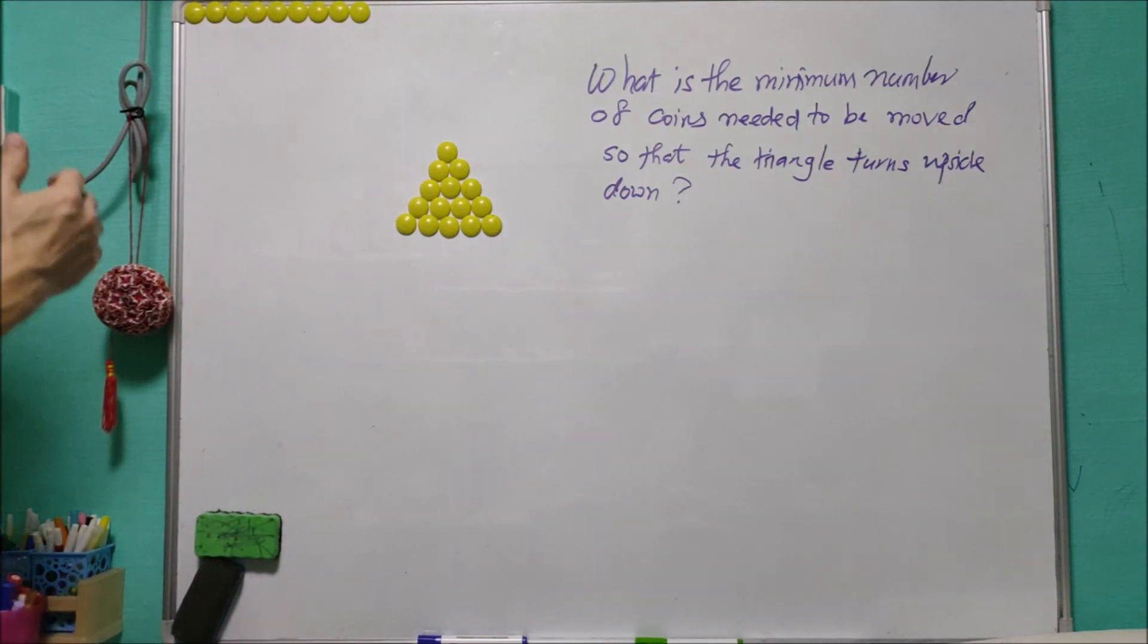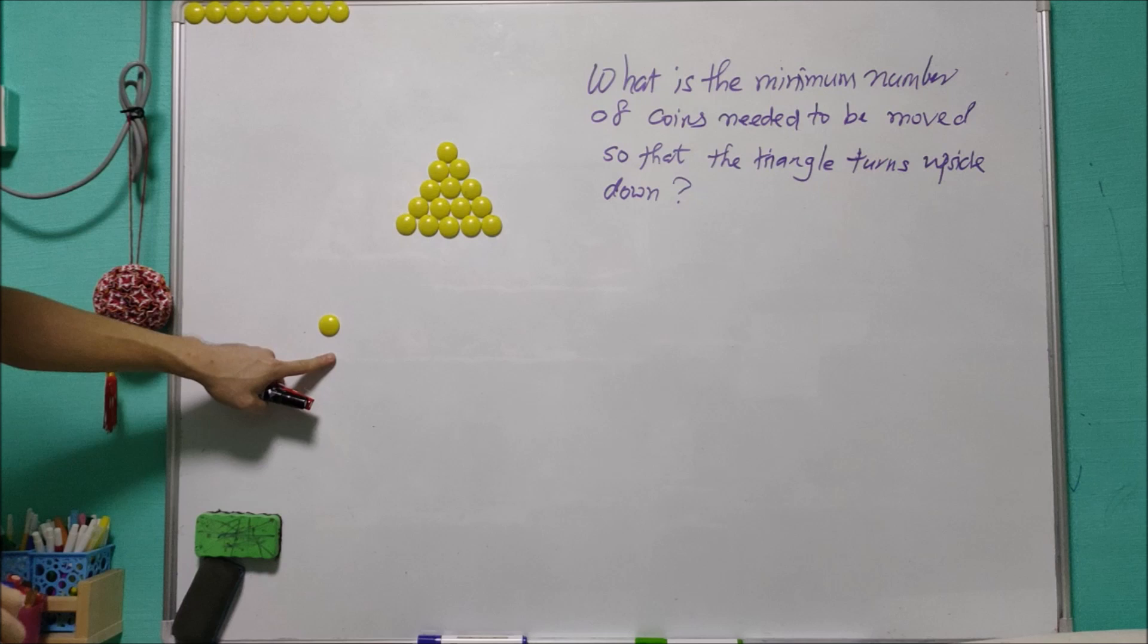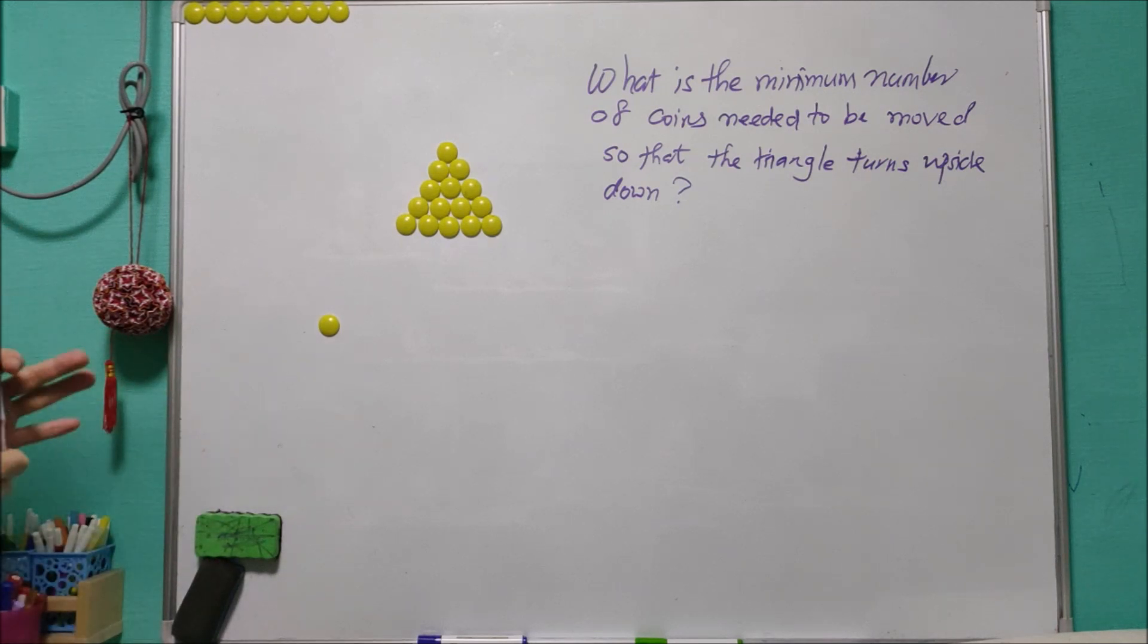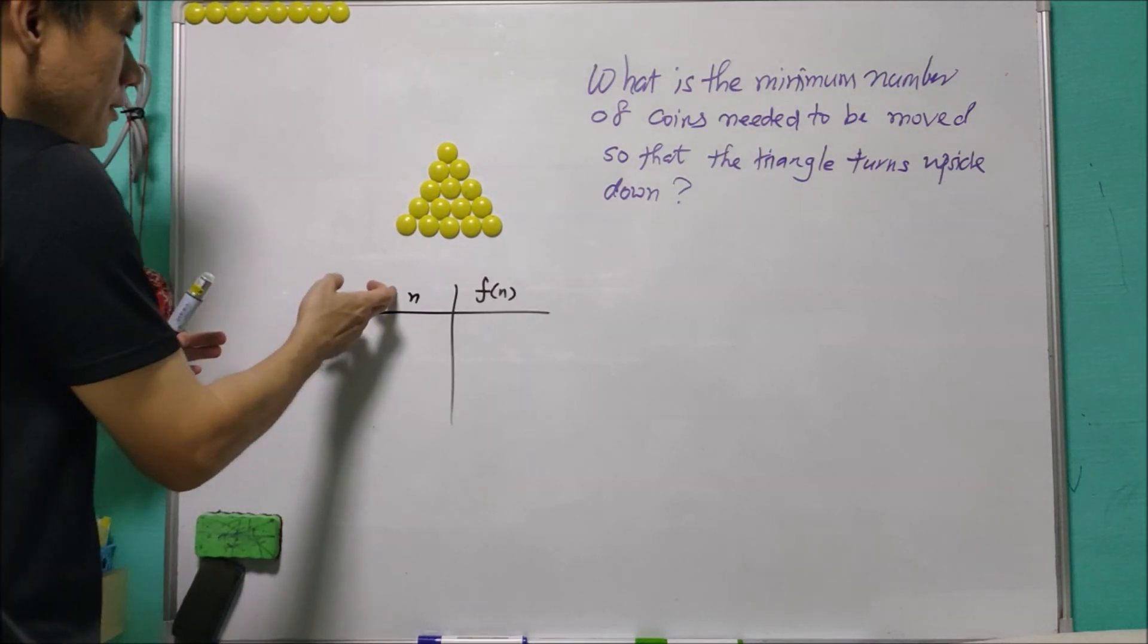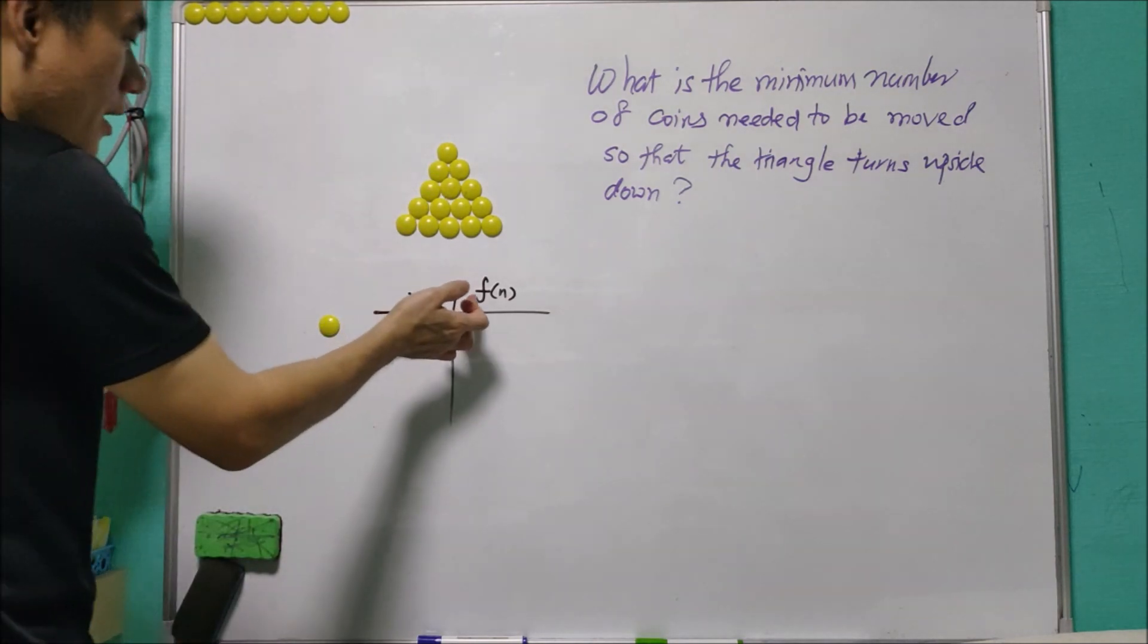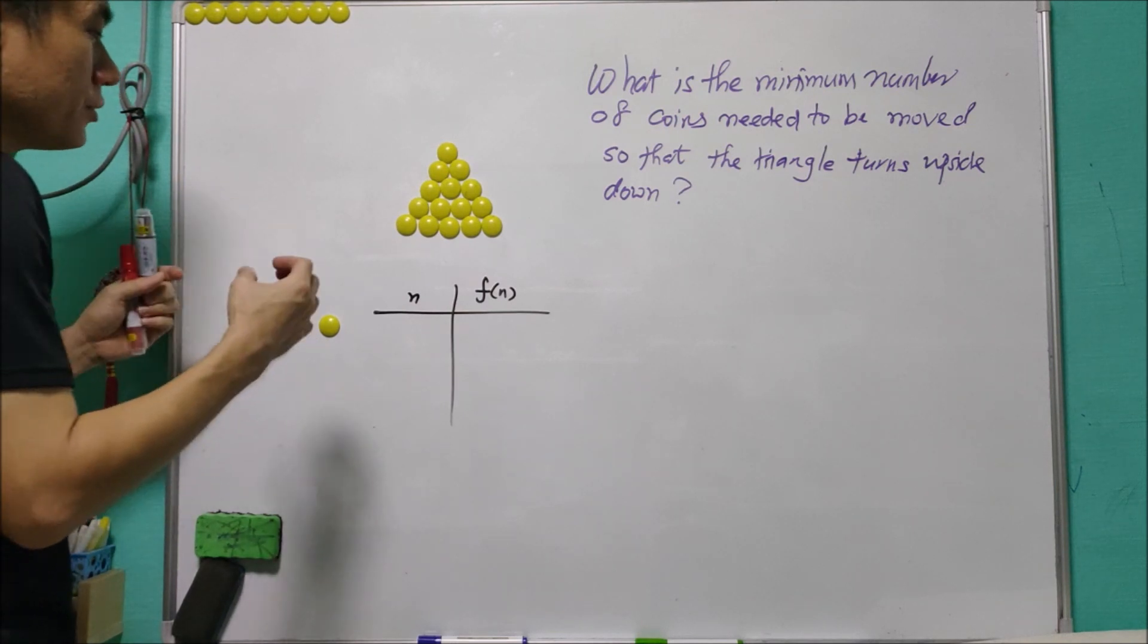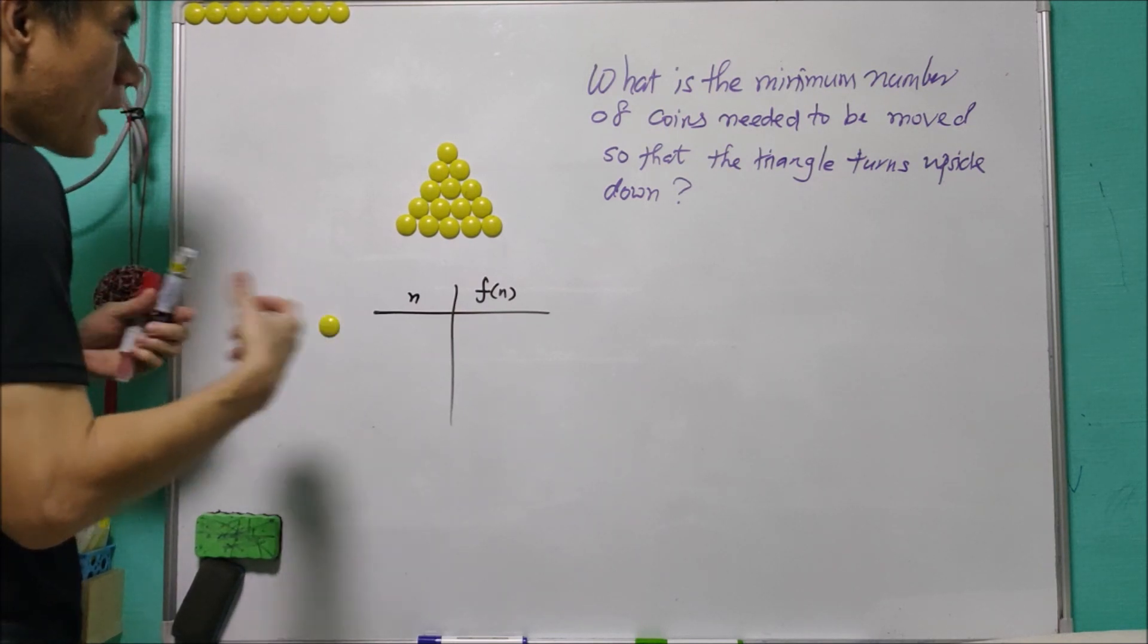Before we solve this problem, let's look at a simple case. Let's say we have only one coin. In that case you don't have to move anything. Let n be the number of rows that the triangle has, and let f(n) be the number of coins needed to be moved so that the triangle turns upside down.